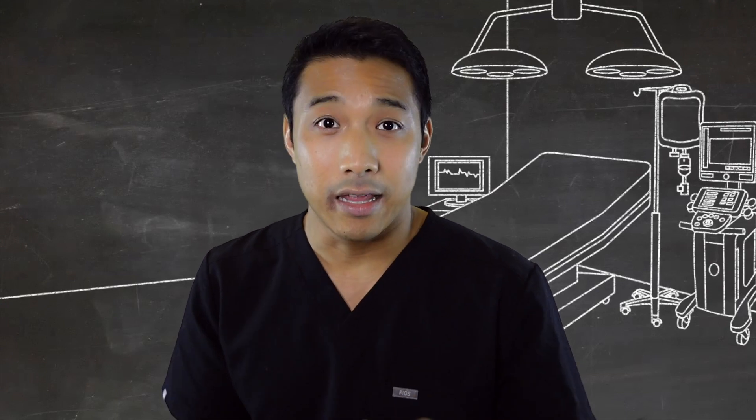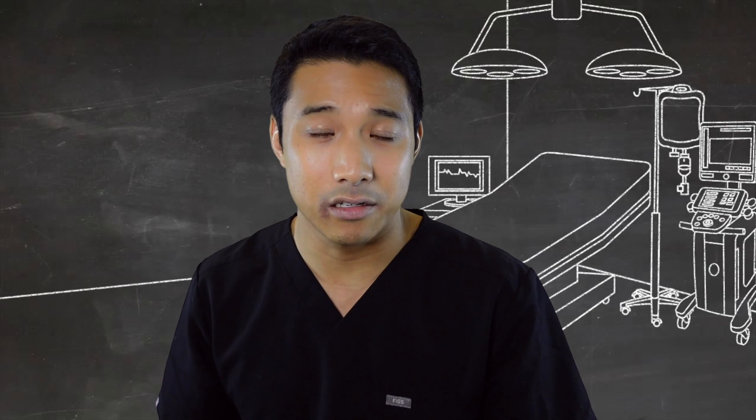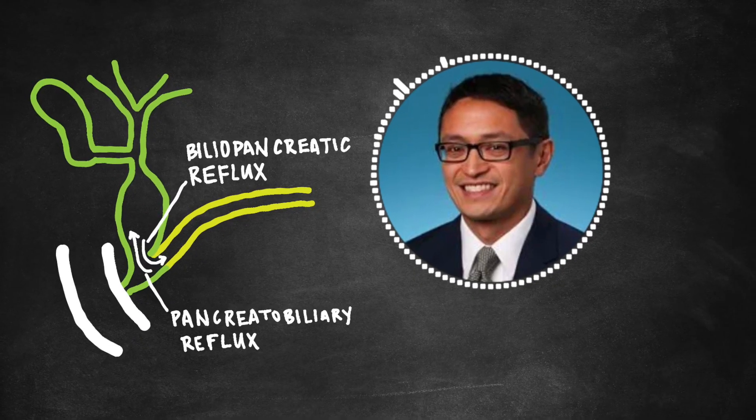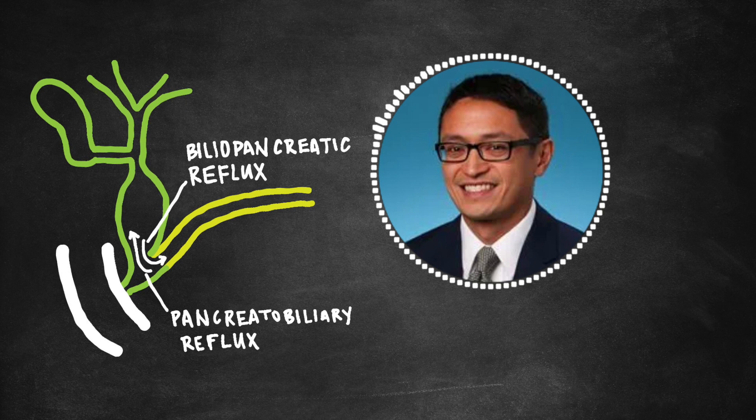In adults, that common channel — basically the confluence of the biliary pancreatic ducts — is supposed to be less than 0.9 centimeters, but in the pediatric patient, any common channel is abnormal, and that is the cause for a lot of these issues. Reflux of pancreatic enzymes from the head of the pancreas back into the biliary tree causes inflammation, degeneration, and epithelial changes.